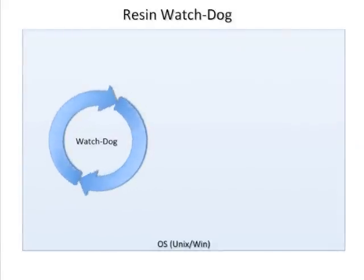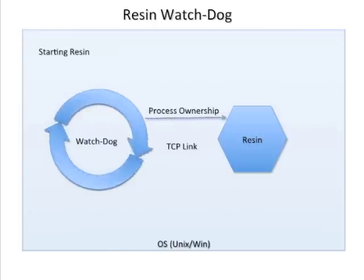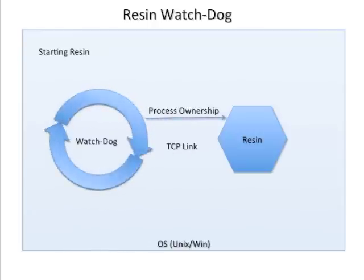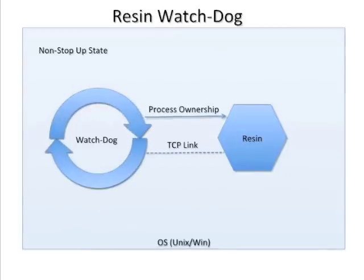Resin Watchdog is part of the Resin Health System. It is a lightweight process that starts up the Resin Java application server. The Watchdog process uses the same tricks clustering software uses to make sure that the Resin application server stays up. If the socket connection goes down, then Resin gets restarted.